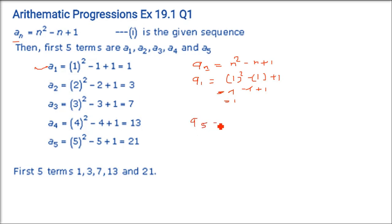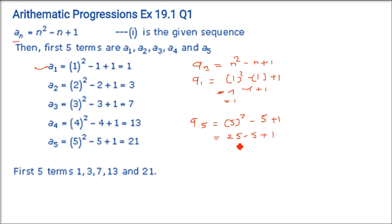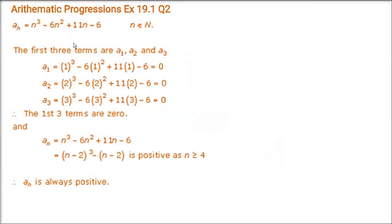Now let us take a₅. Put n = 5: 5² - 5 + 1. 5² is 25, 25 - 5 is 20, 20 + 1 is 21. So a₅ = 21. These are the first 5 terms.